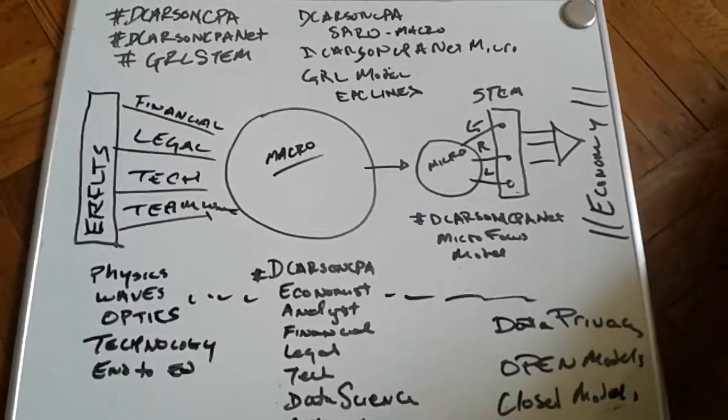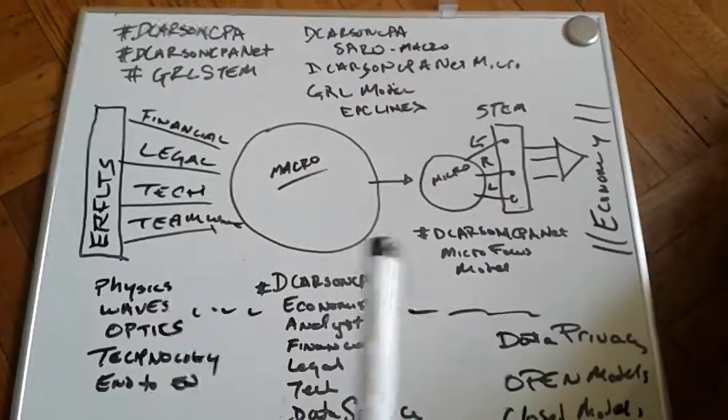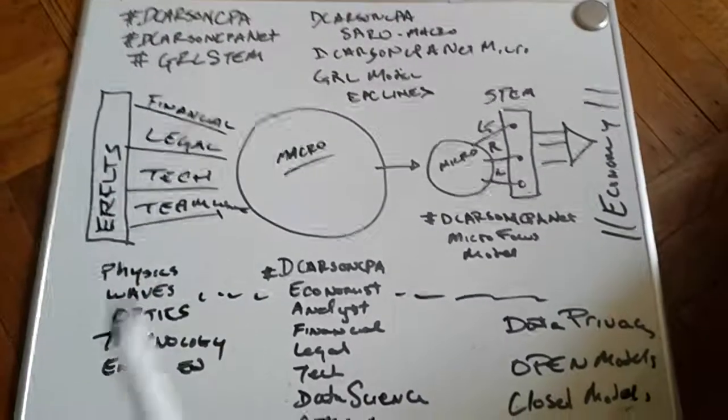DeCarson CPA, DeCarson CPA Net, and GRL STEM. This is a macro, micro, and distribution model here.